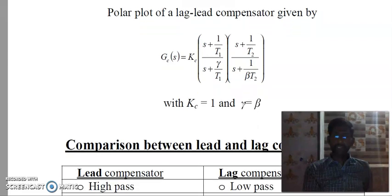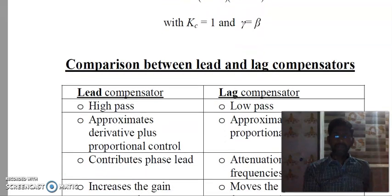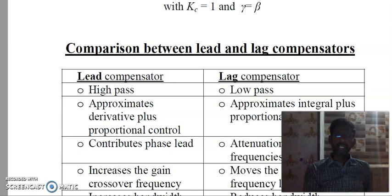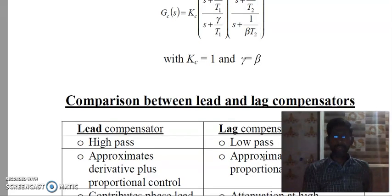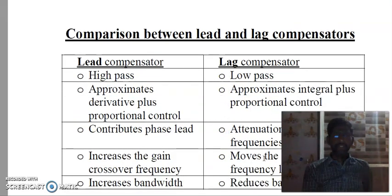Now let's compare lead and lag compensators. The lead compensator always acts as a high pass filter, while the lag compensator is a low pass filter. The lead compensator approximates a derivative plus proportional controller; the lag compensator approximates an integral plus proportional controller. The lead compensator contributes phase lead, while the lag compensator attenuates at high frequencies. The lead compensator increases the gain crossover frequency, whereas the lag compensator moves the gain crossover frequency lower. The lead compensator increases the bandwidth, while the lag compensator reduces the bandwidth.